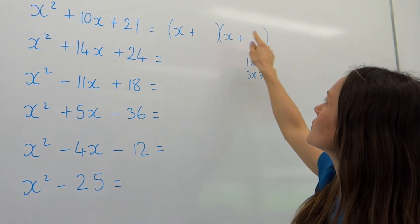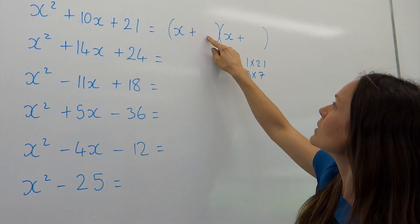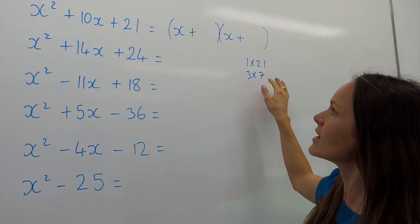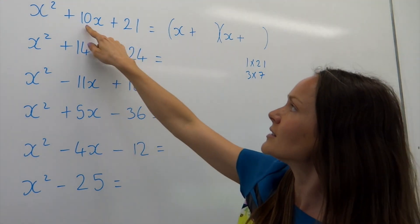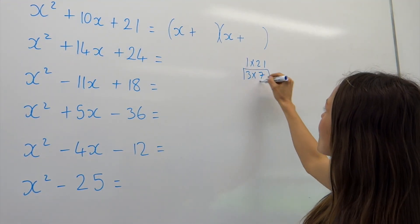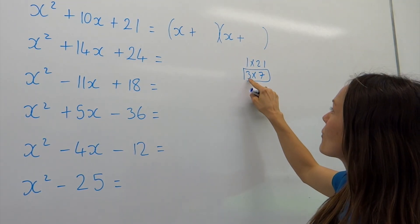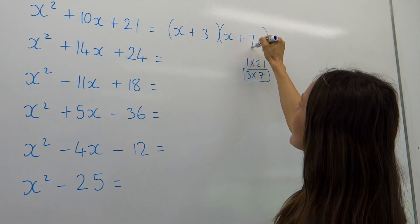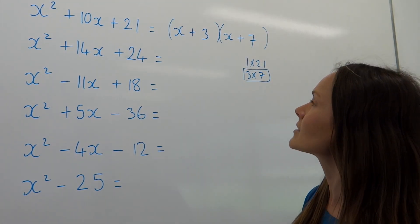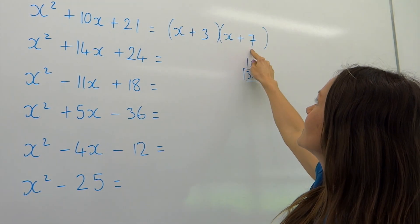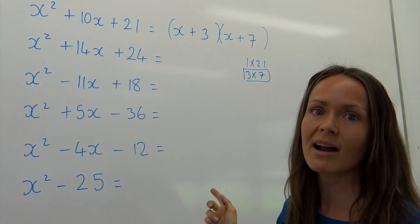Now, we can't just choose any old one and put them in the brackets. They also have to add together to give 10. So these two numbers that are going to go inside the brackets must multiply to give 21, so it's one of these pairs. But they must also add to give positive 10. Well, I can see here 3 times 7 is 21 and 3 plus 7 gives me 10. So they're the numbers that we have to fill in inside our brackets. And it doesn't matter on the order.